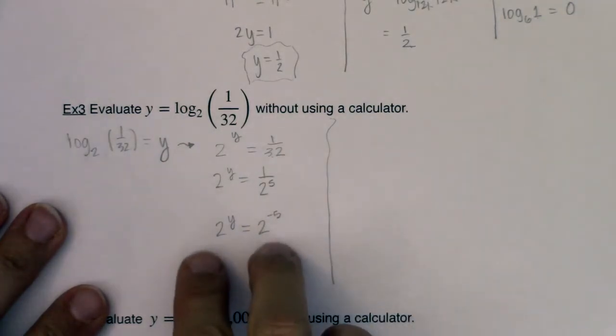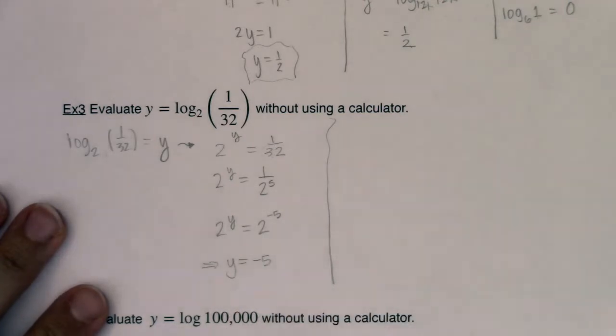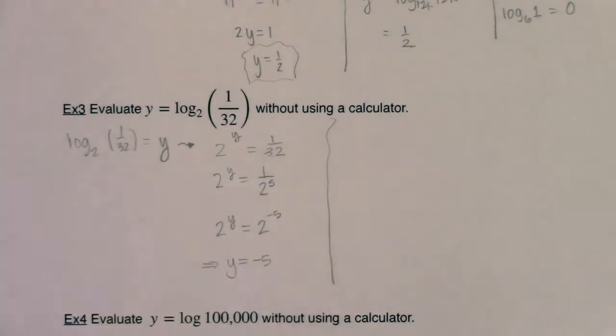And then because both of these powers have the same base, I know their exponents have to be the same as well, so I get y equaling negative 5. And really anytime you start to have fractions, it's a pretty good bet that you'll have a negative exponent in there.